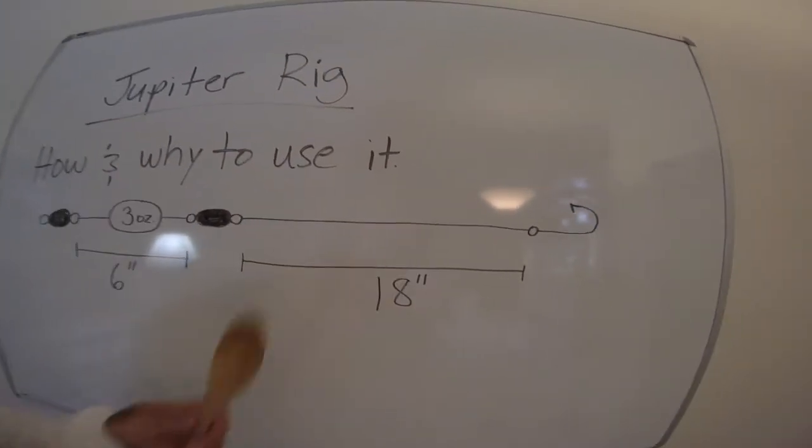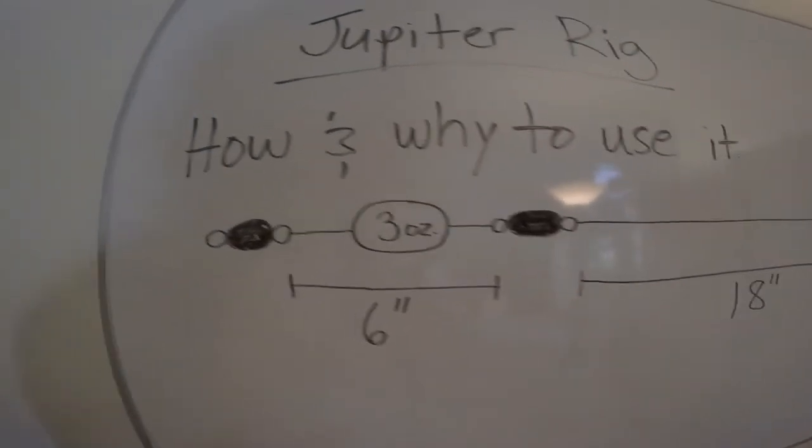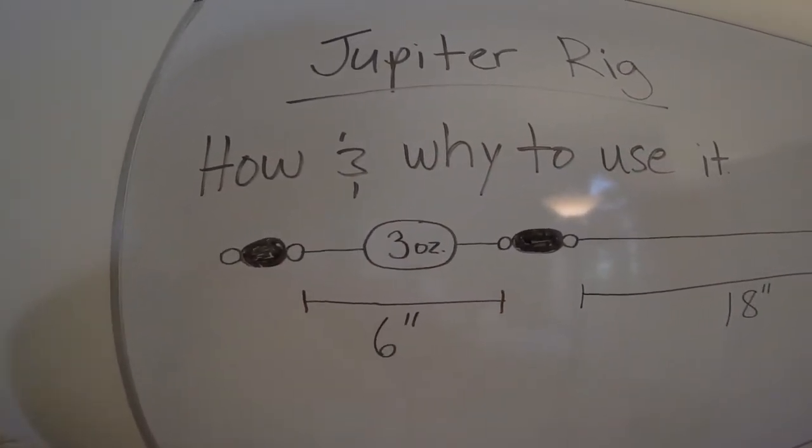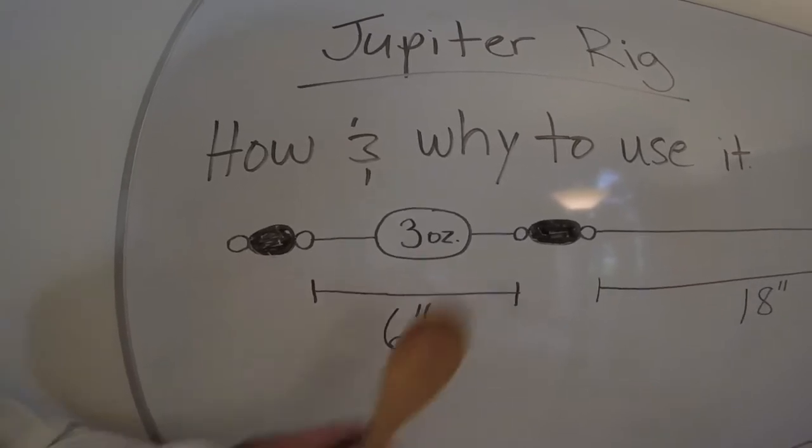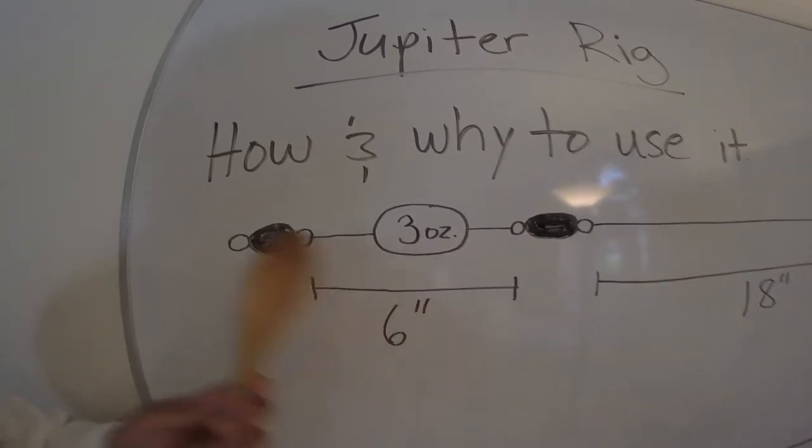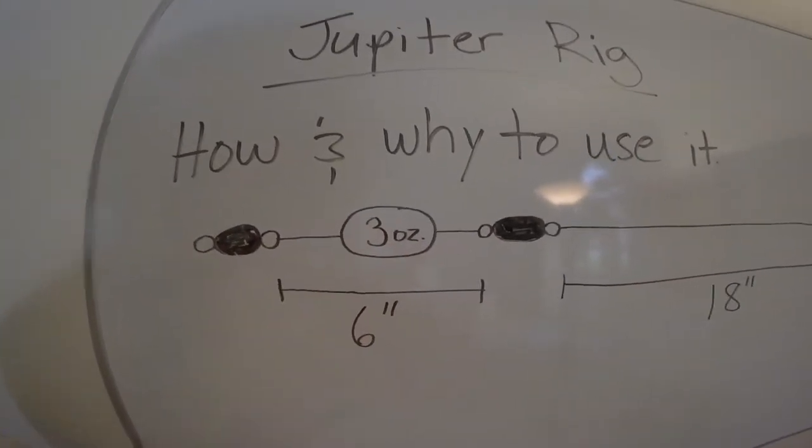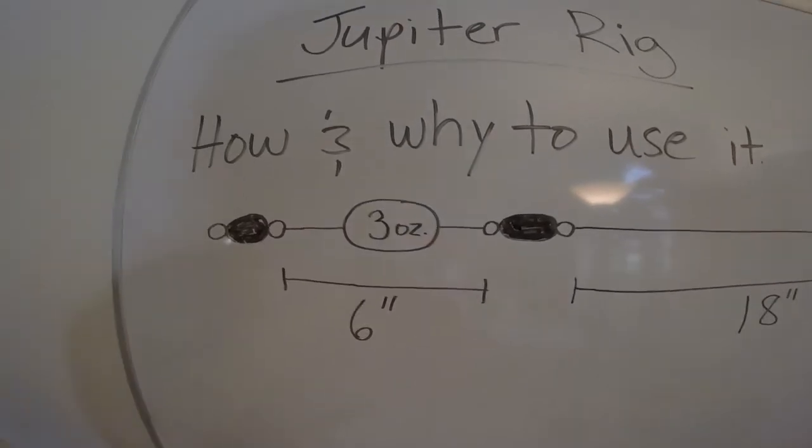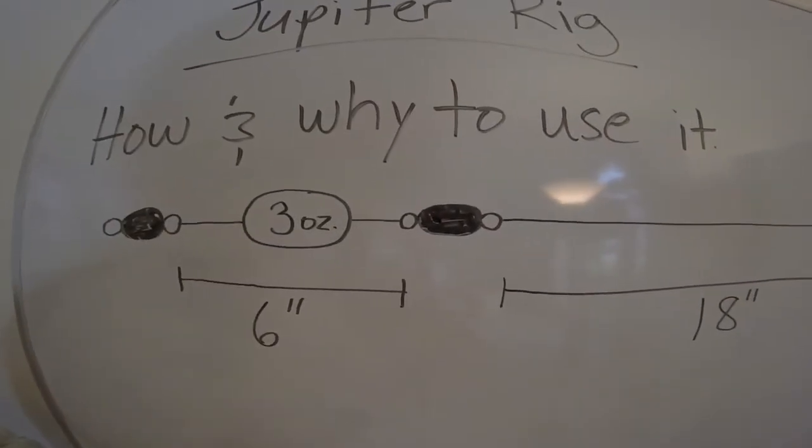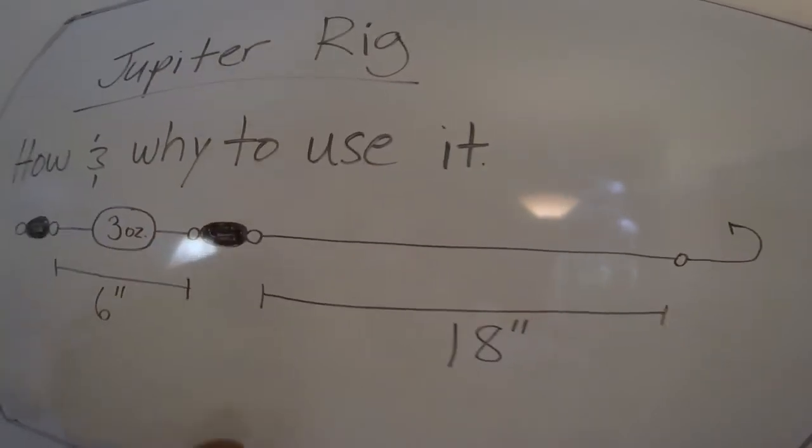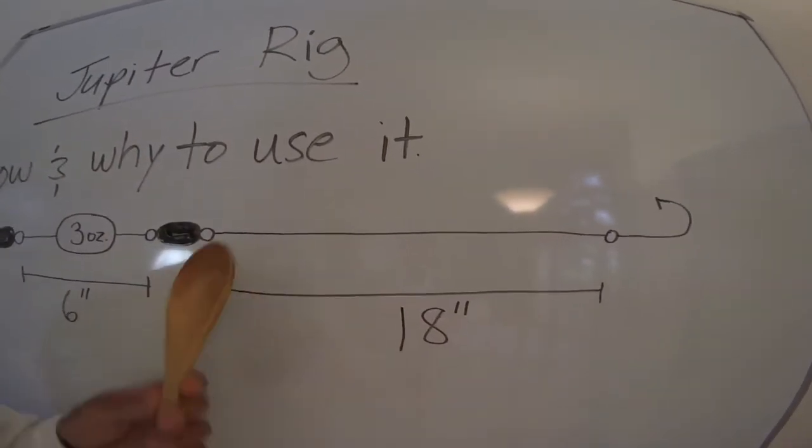So this is your setup. We'll go through it again. You got your swivels about six inches of 60, 80 pound test in between your swivels, which is six inches long, three, four ounce sinker, or depending on the current, of course, you come on down and you got 18 inches worth of leader.